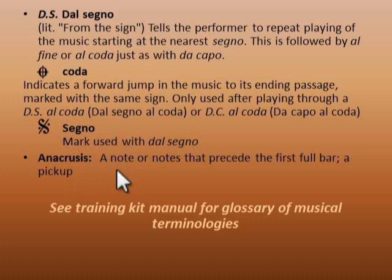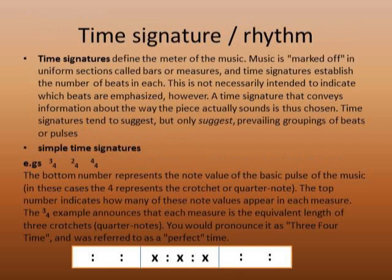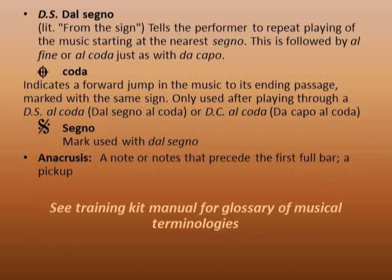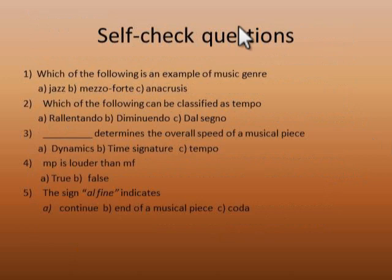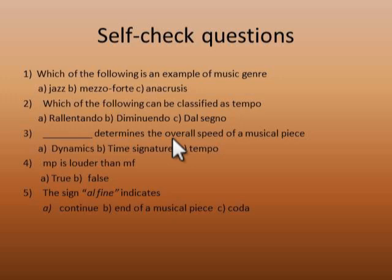Anacrusis: in some musical pieces you may see that certain beats are missing at the start — you might see notes only on the final beat of what would be the first bar. When you come across such a case, you say that you have an anacrusis. Now let's solve the self-check questions: Which of these is an example of music genre — jazz, mezzo forte, or anacrusis? Which of the following can be classified as tempo — ritardando, diminuendo, or dal segno?